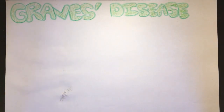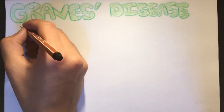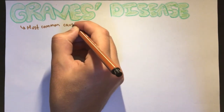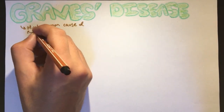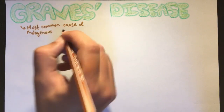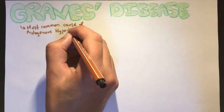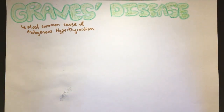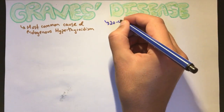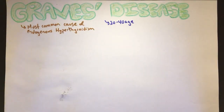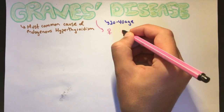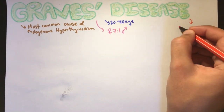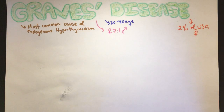Graves disease is the most common cause of endogenous hyperthyroidism — endogenous meaning the body itself causes it, as opposed to exogenous, where the patient takes thyroid hormone supplements. Graves disease has a peak incidence between ages 20 and 40, with females affected seven times more than men. Two percent of United States females have Graves disease.